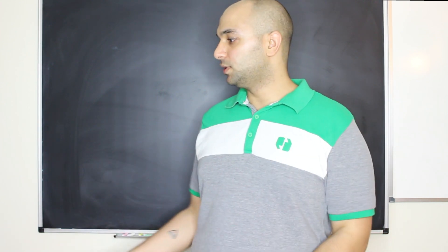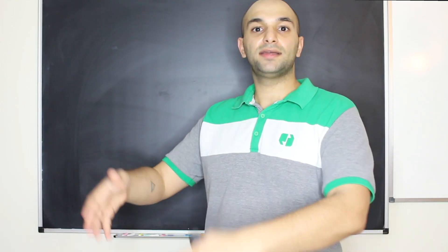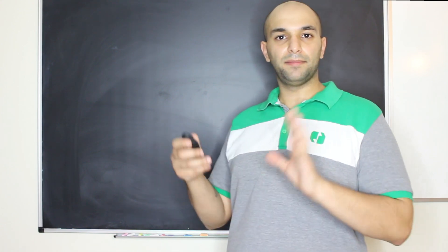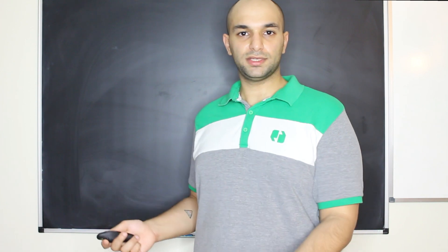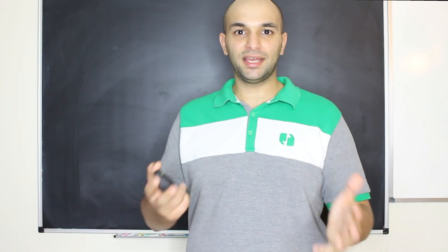We have a system where you can study not only co-evolution but also pattern perception, deception, and learning. There's also something interesting for morphogenesis: the host must produce an egg with a signature and simultaneously change how it processes visual information, so egg development is coupled to changes in the visual system. We presented the Minkowski functionals as a way to gain insight and discover what visual features might be involved. They partially explain the results, more work is to be done, and more experiments are coming.